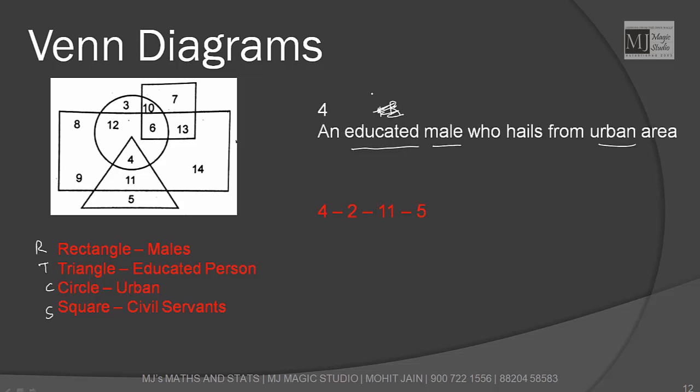Educated plus T, male plus R, who hails from urban area plus C. I am just looking out for T + R + C. In T I have 4, 11, 5. Common portion with R is 4 and 11. Common portion with circle is 4. So best fitted answer is 4. Part 4 means an educated male who hails from an urban area.